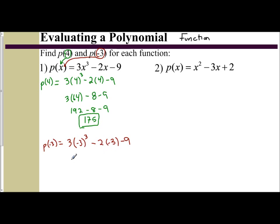And then we just focus on this right side and evaluate the expression. So -3 cubed is -27. So 3 times -27, -2 times -3 is a positive 6, minus 9. 3 times -27 is -81. So you have -81 plus 6, minus 9, which is going to be -84.